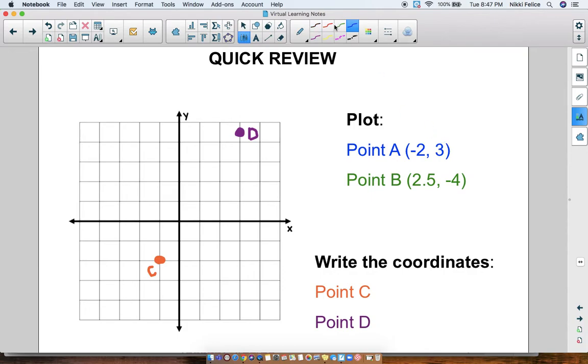Now remember, when you are plotting or when you are writing an ordered pair, an ordered pair is the two numbers. The first number is always the x-coordinate, meaning where is it on the x-axis? We have to go left and right before we go up and down. So first we figure it out, where it goes left or right. Then is my y-coordinate, and the y-axis goes up and down. So after you go left or right, then you can go up or down.